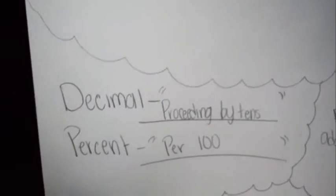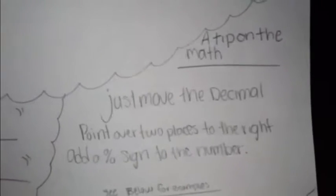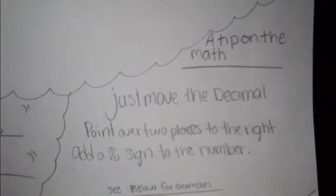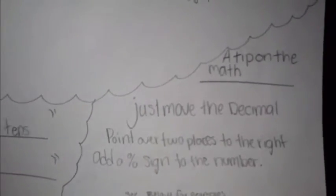Decimal means proceeding by tens. Percent means per 100. A tip on the map: Just move the decimal point over two places to the right and add a percent sign to the number. See below for examples.